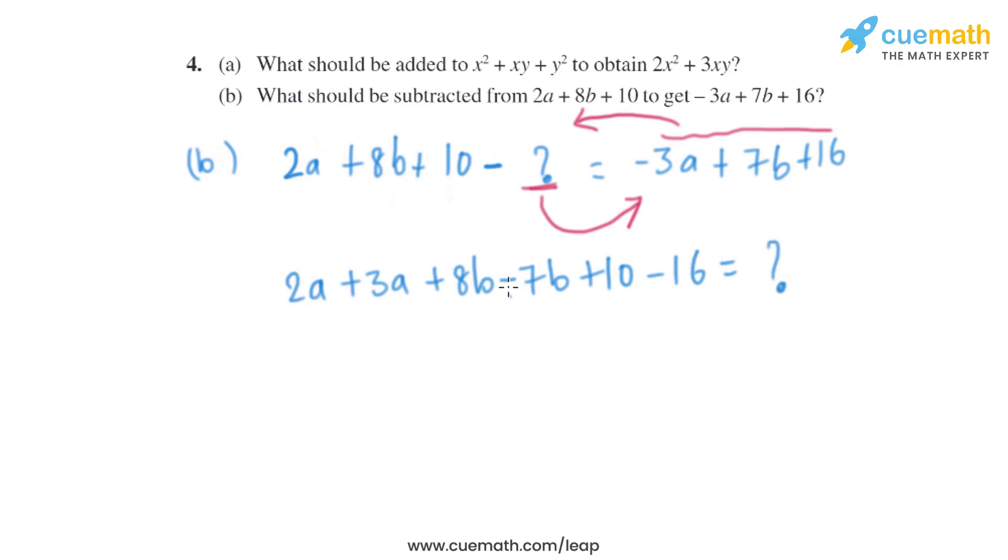Now just we will have to add and subtract the like terms. So 2a + 3a will give us 5a, 8b - 7b will give us b, and 10 - 16 will give us -6.